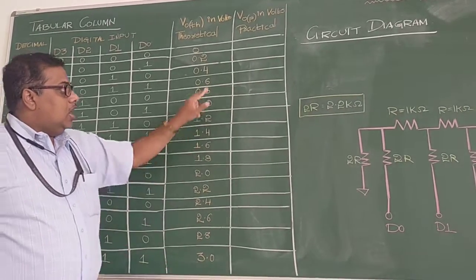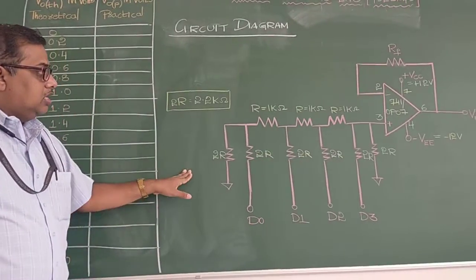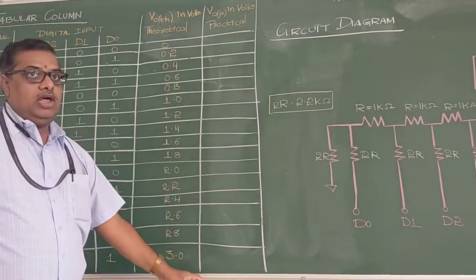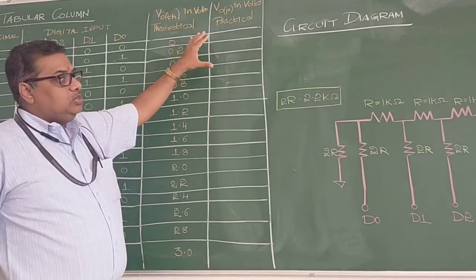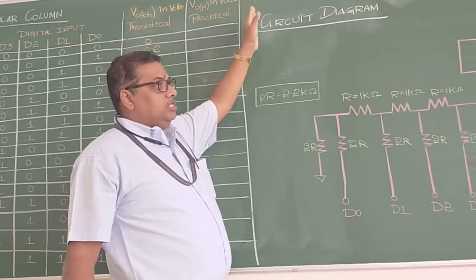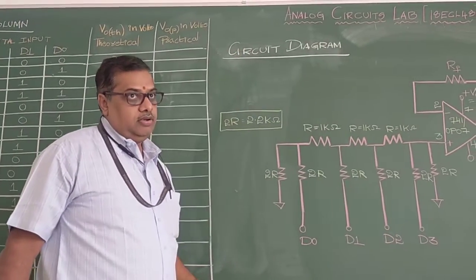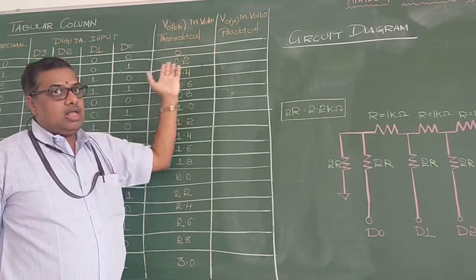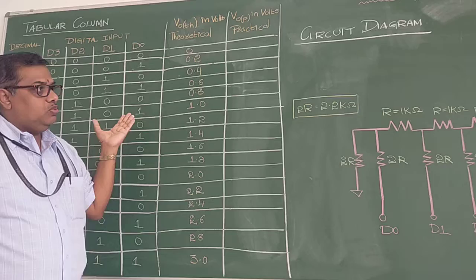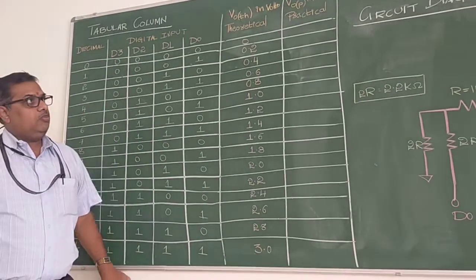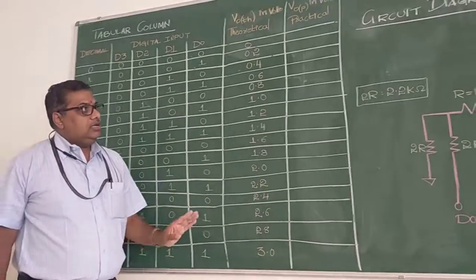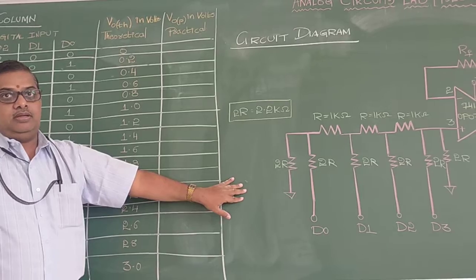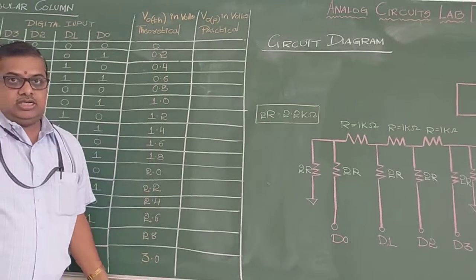Now what we have to do, we have to build this circuit and we have to perform the experiment, and we have to write the practical values. Naturally there will be some difference here, then the difference we will see how much difference is there, we note it down. This is what the experiment is. I hope you have understood. Now what I will do, I will build this circuit and I will show you the working of this particular experiment. That will be the next stage. Thank you.